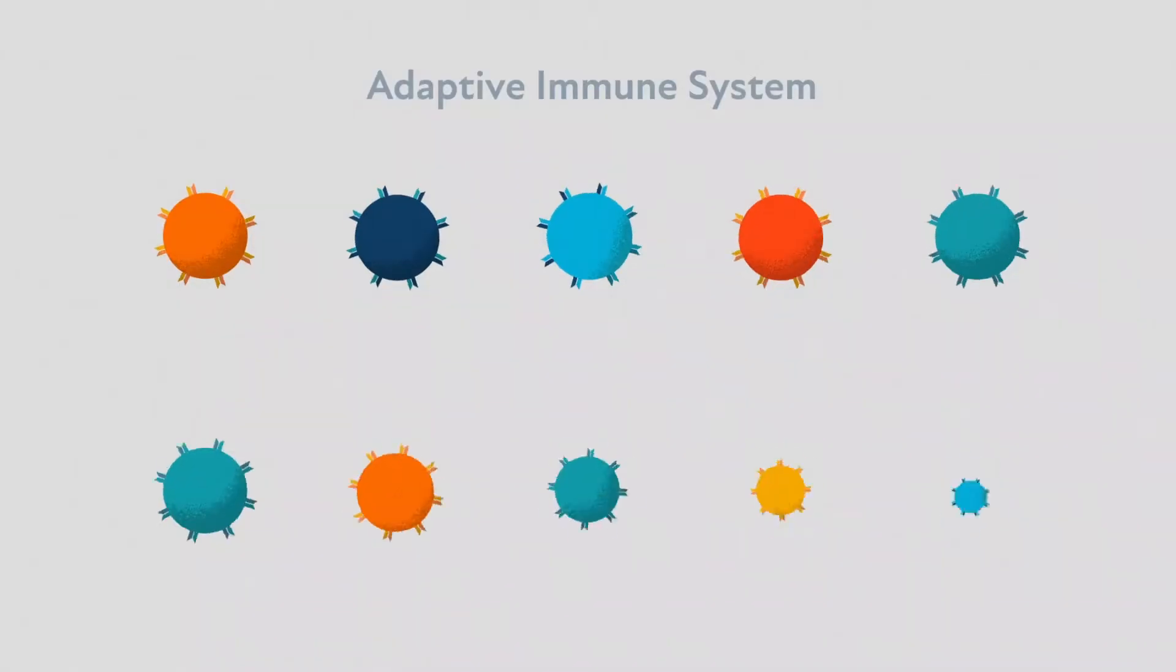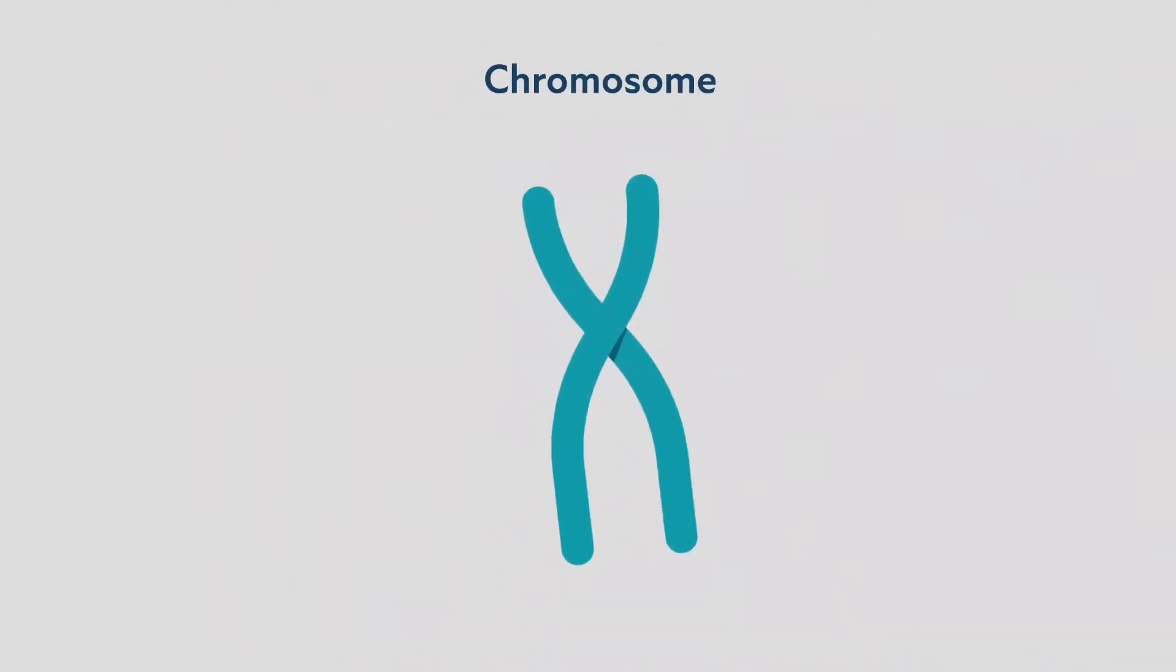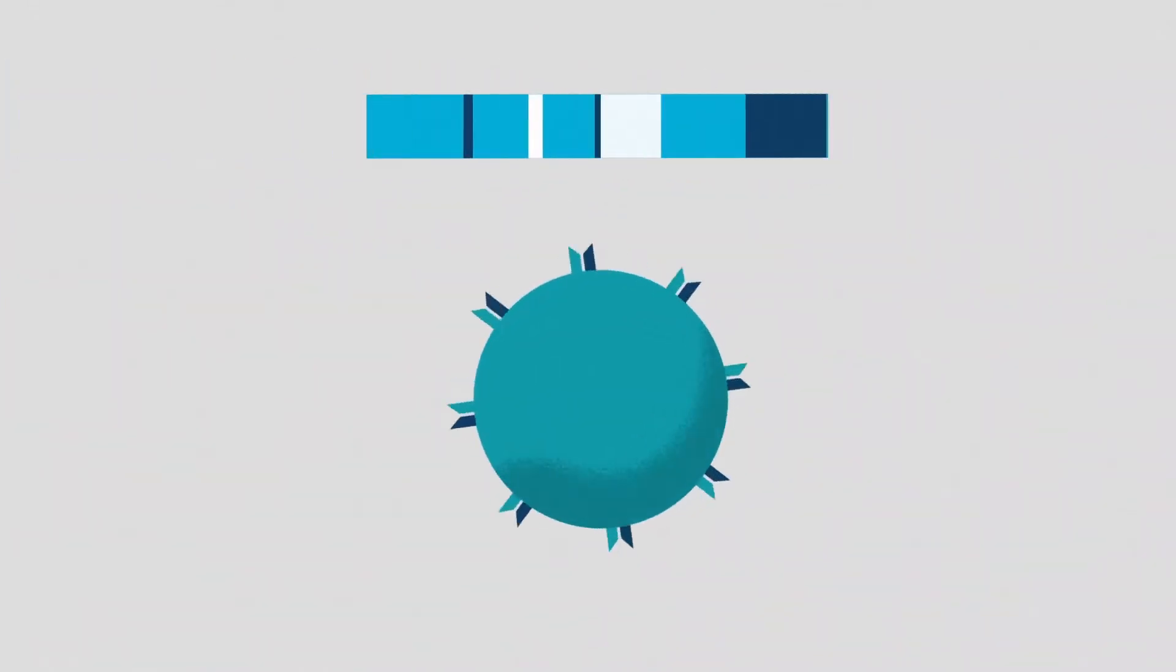How does the adaptive immune system do this? The answer is in your genes. Unlike every other gene in the human genome, the genetic sequences of TCRs and BCRs rearrange as the cells develop.